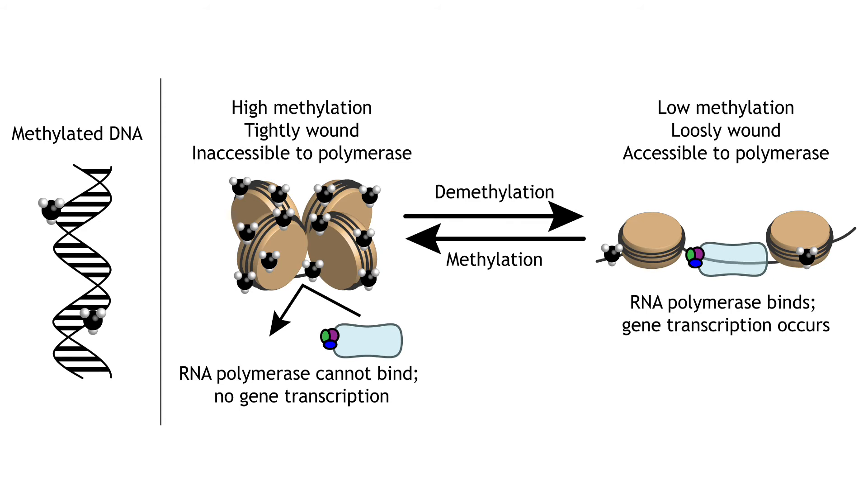When the methyl groups are removed, called demethylation, which is not to be confused with dimethylation, the addition of two methyl groups, gene expression can increase because DNA uncoils and is accessible to the transcriptional machinery.